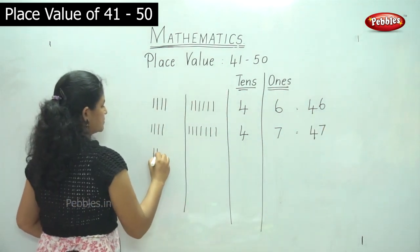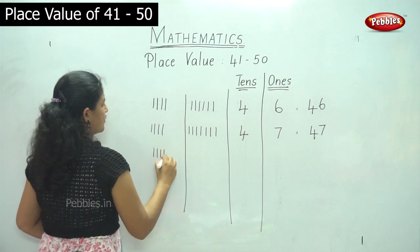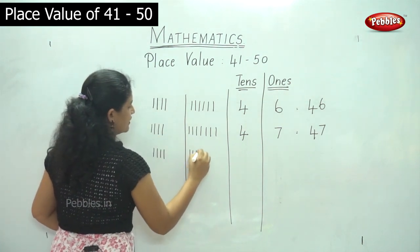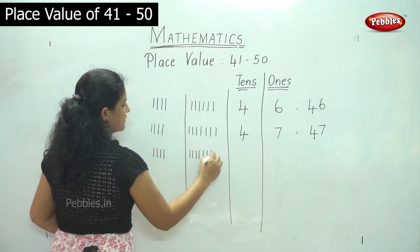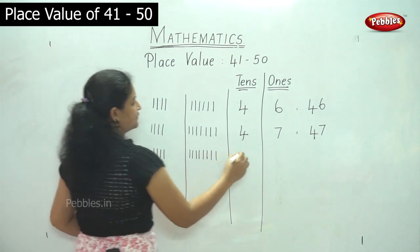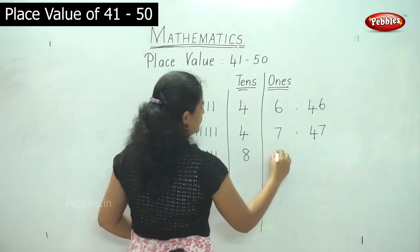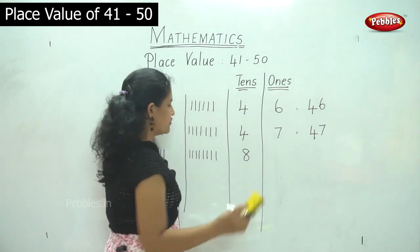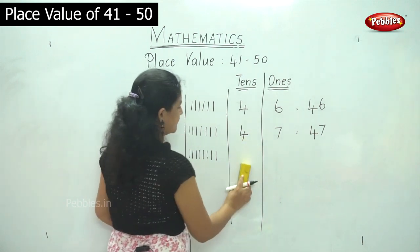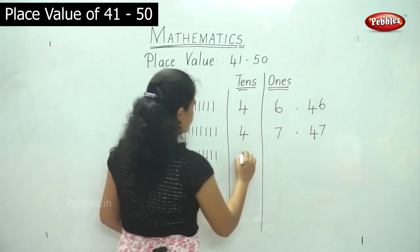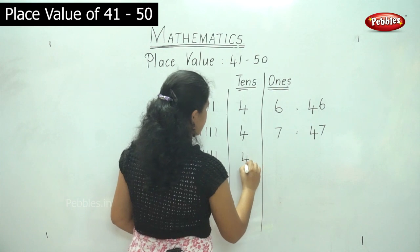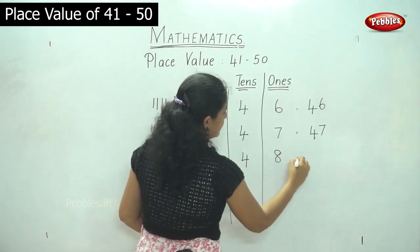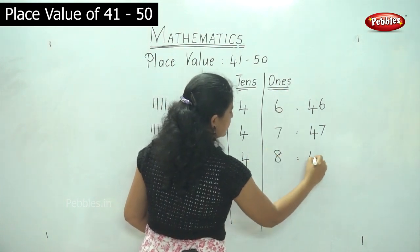Then 1, 2, 3, 4 — 4 tens — and 1, 2, 3, 4, 5, 6, 7, 8 — 8 ones. So I have 4 tens and 8 ones. That gives me the number 48.